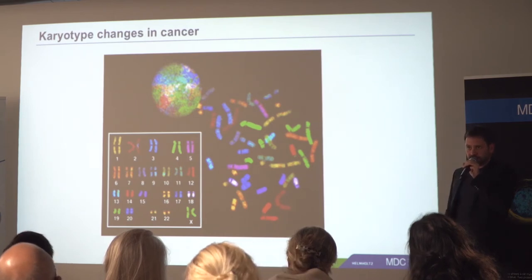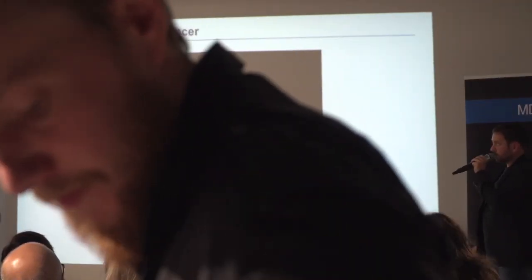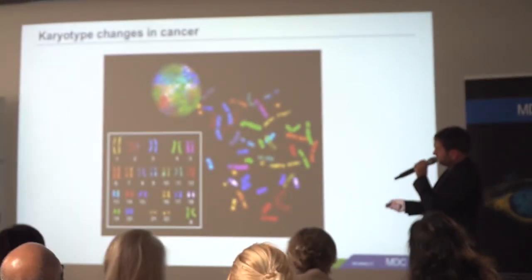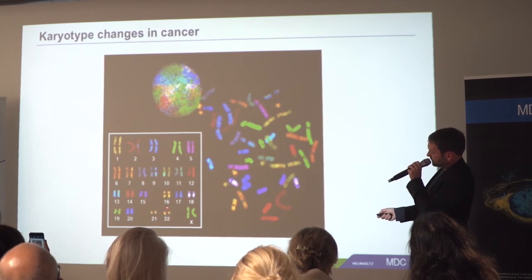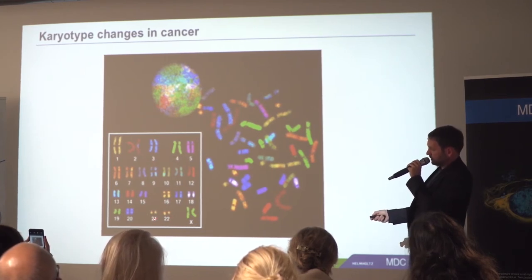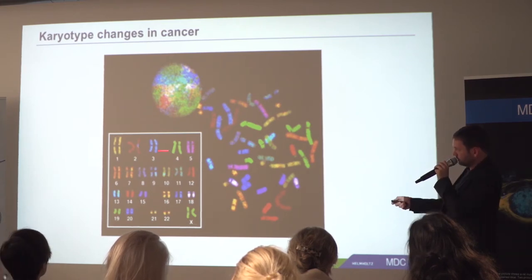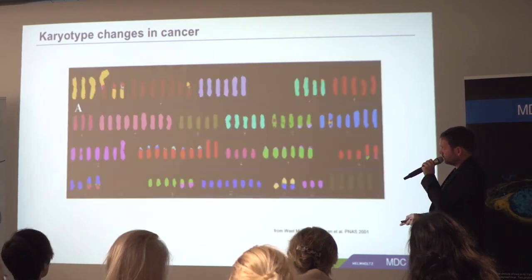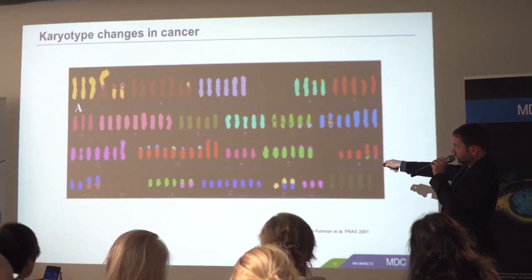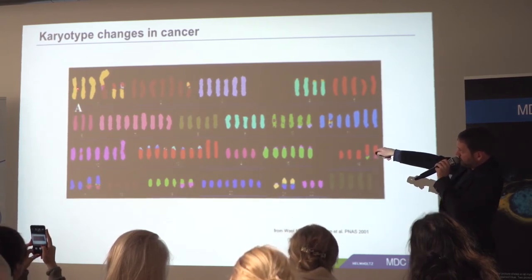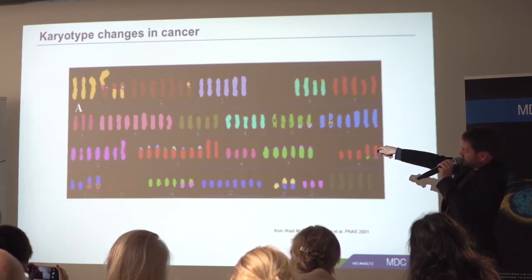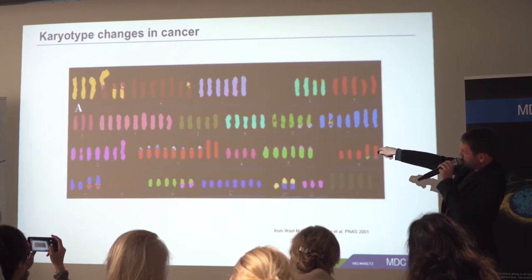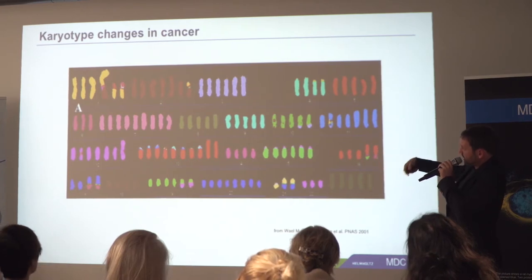Those were sequence mutations. The second class is genomic rearrangements. We have 22 pairs of chromosomes plus X, two copies each — one from father, one from mother. In a healthy cell, there are nice two copies of everything. A cancer cell looks very different: here you see six copies of chromosome one instead of two; parts of chromosome one fuse to chromosome two; there are chunks of chromosome three fused to chromosomes one and two. These are highly rearranged genomes.